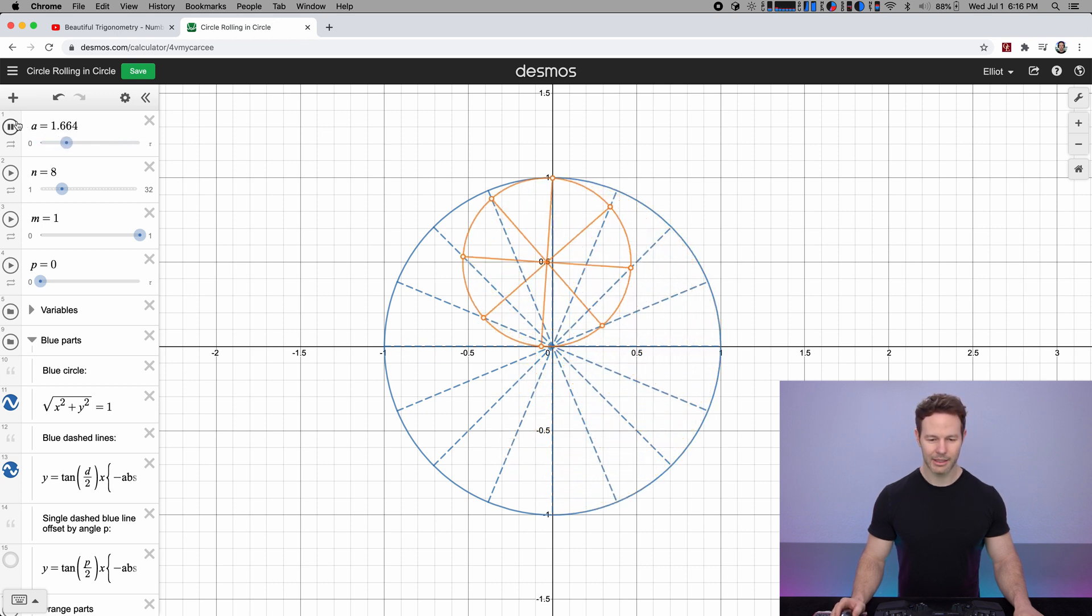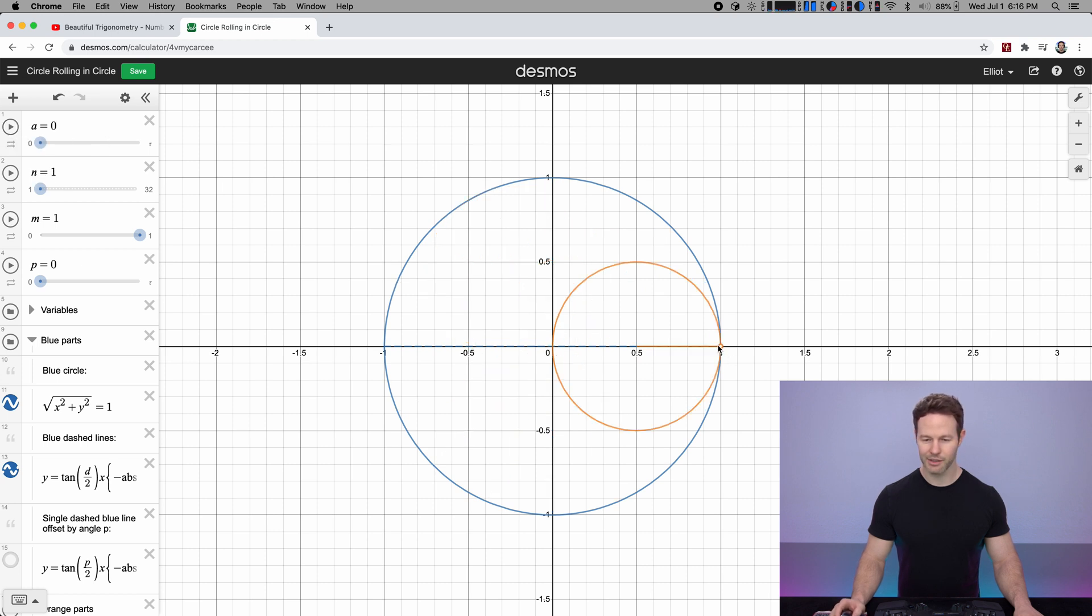I think it helps if we start with just looking at a single dot. First of all, since the diameter of the blue circle is twice that of the orange circle, its circumference, which is π times the diameter, will also be twice as much. So this half arc of the orange circle is going to be the same length as this quarter arc of the blue circle.